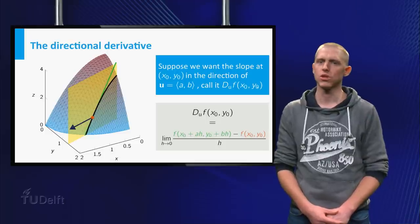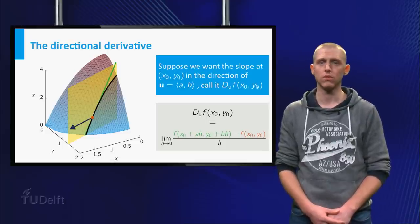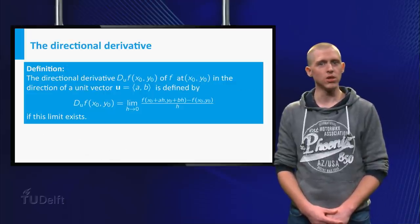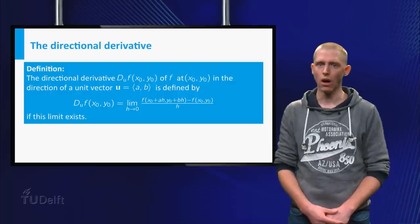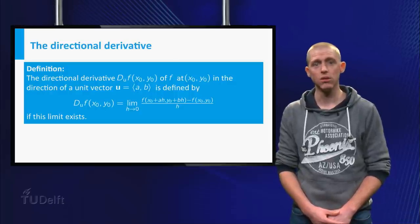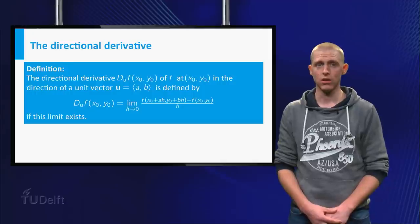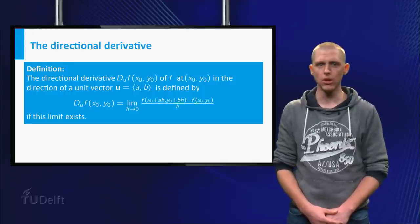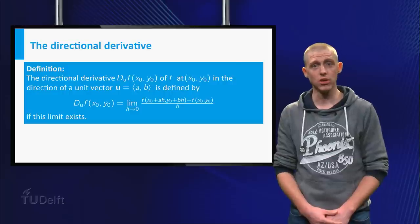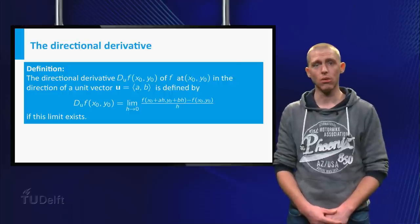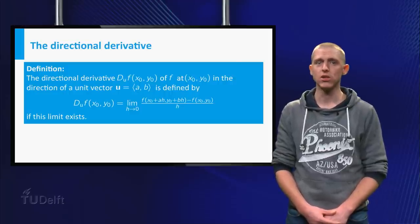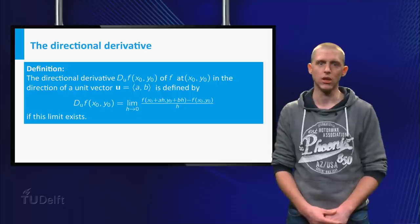We can formulate the precise definition of this directional derivative as the directional derivative duf of f at x0, y0 in the direction of a unit vector u equal to ab is duf equals the limit of f x0 plus a h y0 plus b h minus f x0, y0 over h as h approaches 0 if this limit exists.